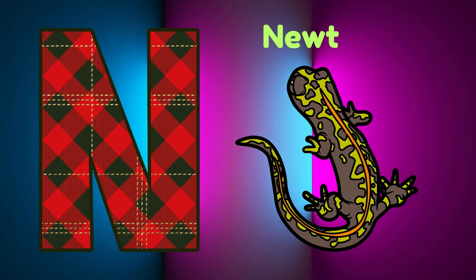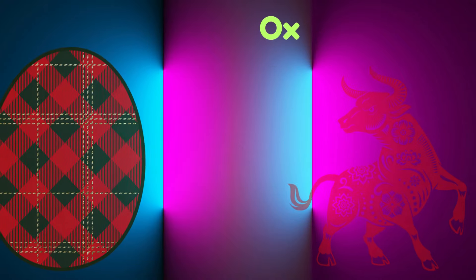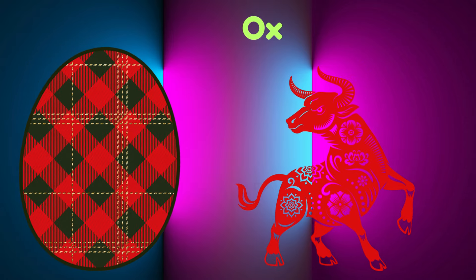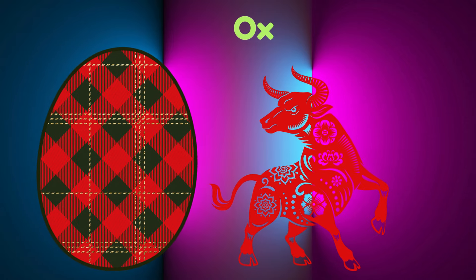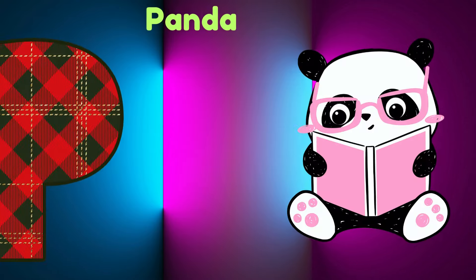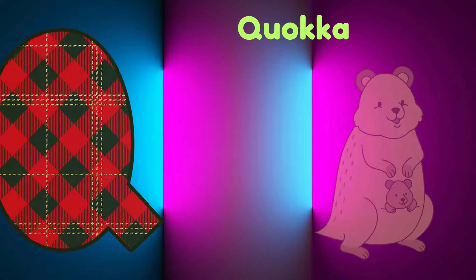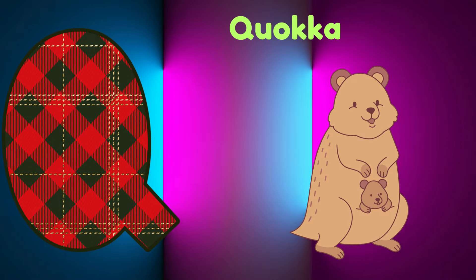N is for Newt. N, N. Newt. O is for Ox. O, O. Ox. P is for Panda. P, P. Panda.